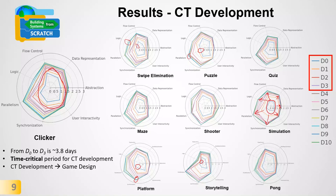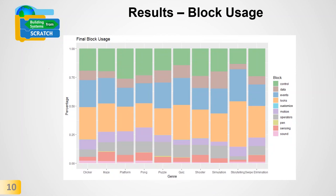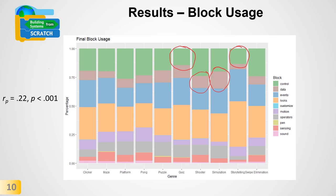Looking at block usage results: while block use is roughly distributed across game genres, quiz and storytelling games show less frequent use of control and logic blocks, which may prevent students from becoming proficient in logic and learning conditional statements. On the other hand, shooter and simulation games make frequent use of data blocks, giving students a higher chance of reaching proficiency in data representation. Although we could not find a significant impact of block usage on computational thinking, we did find a small but significant correlation, suggesting future work should further scrutinize block usage and how it impacts CT.